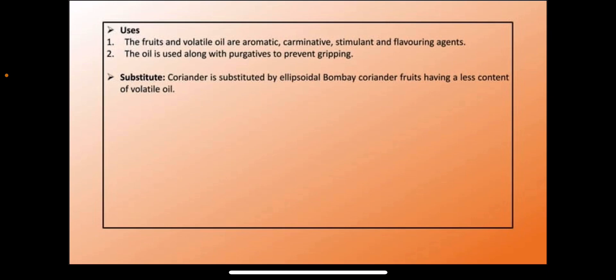Uses of coriander: the fruit and volatile oil are aromatic, used as a carminative and stimulant — stimulant means it increases digestion in the GIT tract — and it is used as a flavoring agent in cooking. The oil is also used along with purgatives to prevent griping. Ellipsoidal Bombay coriander fruit, which has less volatile oil content, acts as a substitute or adulterant for coriander.